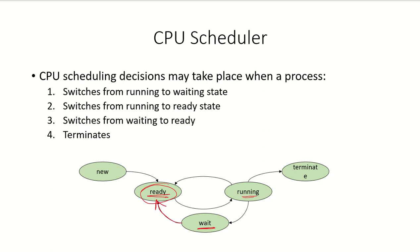The last possibility is that a running process has terminated. The CPU is again available and the scheduler will have to take a decision — getting one process from the ready queue and allocating the CPU to it.